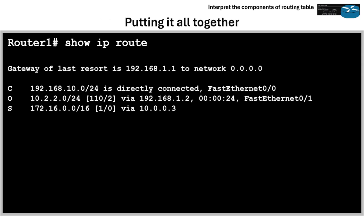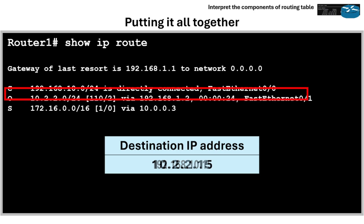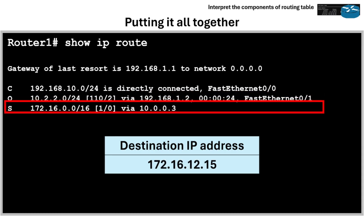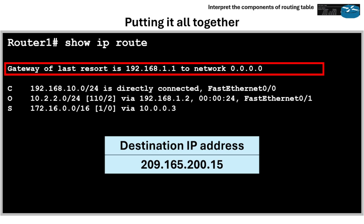Let's put it all together. In this 'show IP route' output: if the destination is 192.168.10.15, it will use the directly connected route and send out to FA0/0. If the destination is 10.2.2.15, it will forward to 192.168.1.2. If the destination is 172.16.12.15, it will forward to 10.0.0.3. If the destination IP address is 209.165.200.15 and nothing matches, it will send to the gateway of last resort, which is 192.168.1.1.